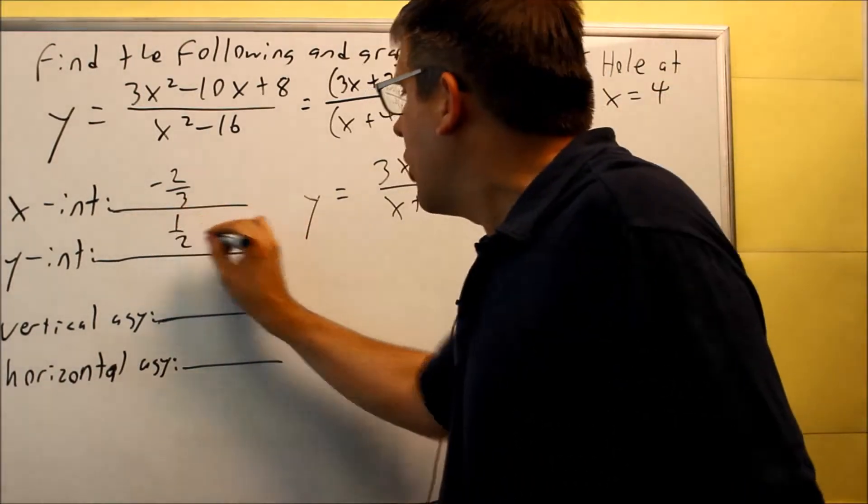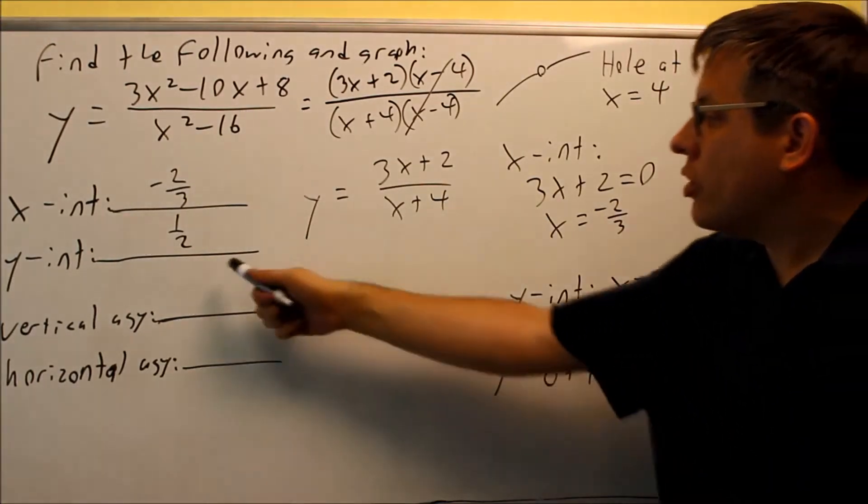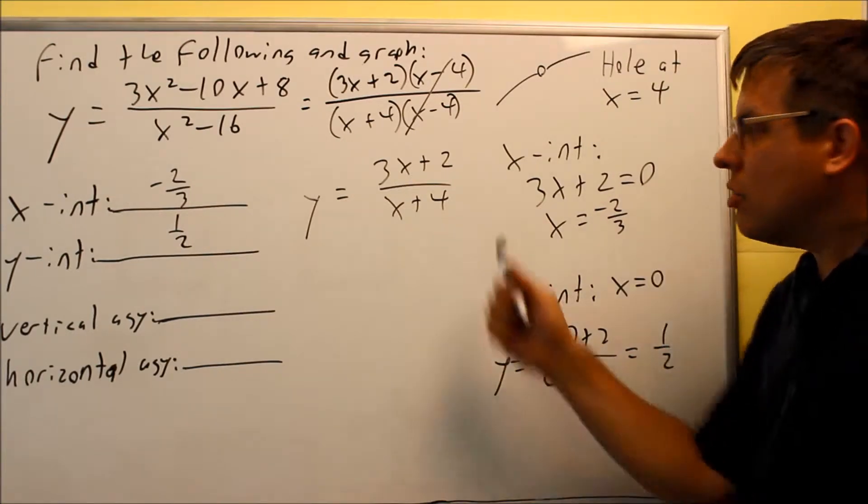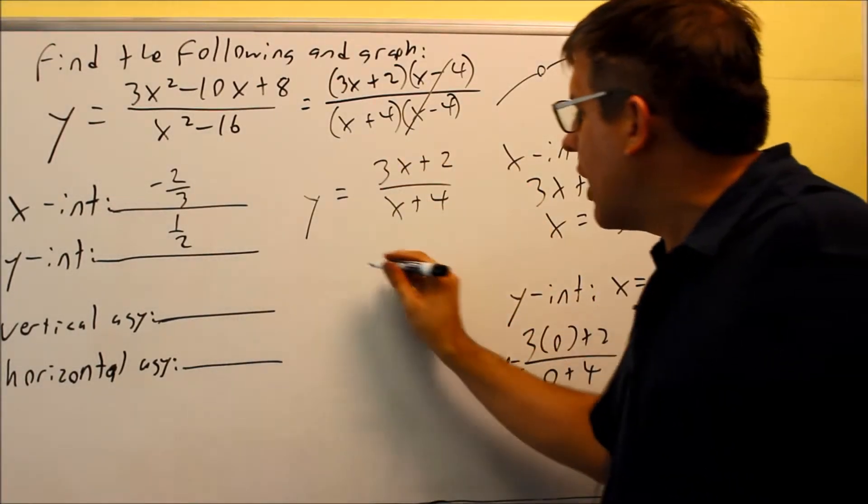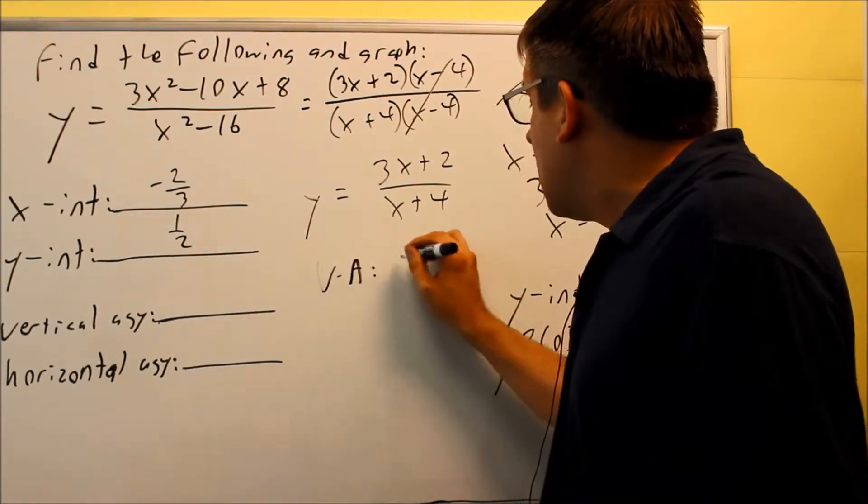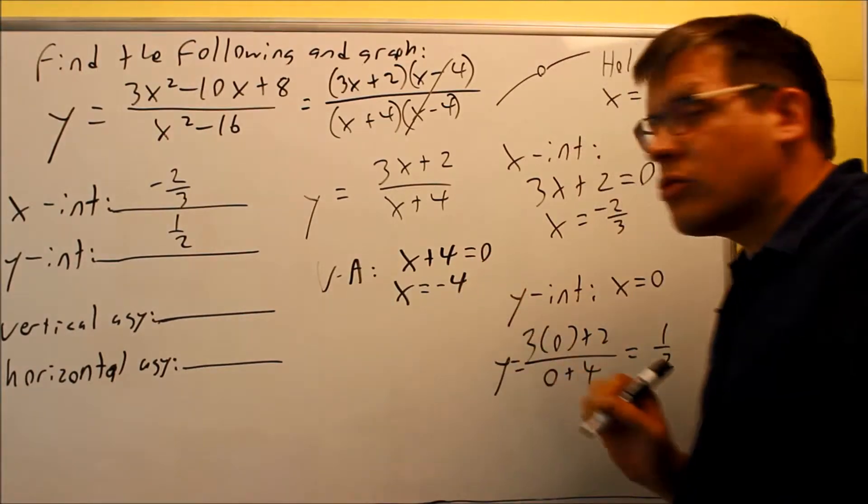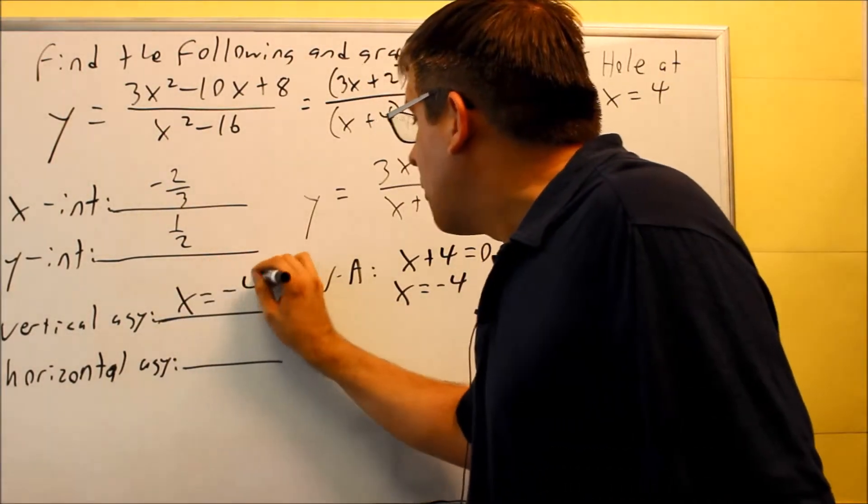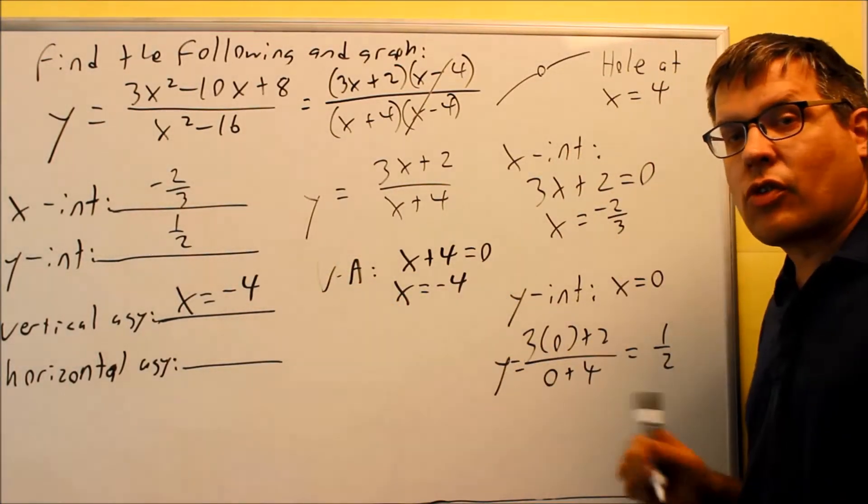So always use your reduced one especially when you're finding your asymptotes and x-intercept. You must make sure that you use the reduced one. So for the vertical asymptote I'm going to set x plus four equal to zero and I get x is equal to negative four. I want to make sure again you have to put the x equals as part of your answer. Don't forget to put that in there because otherwise you don't have an equation of a line, it's going to be marked wrong. So x is equal to negative four.